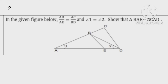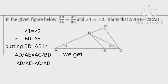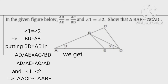In the figure, angle 1 equals angle 2 implies that BD equals AB. Putting BD equals AB in AD upon AB equals AC upon BD, we get AD upon AB equals AC upon AB. And angle 1 equals angle 2 implies that triangle ACD is similar to triangle AB. Hence proved.